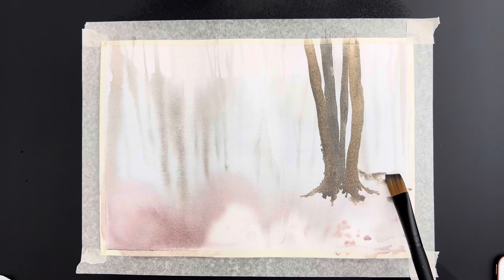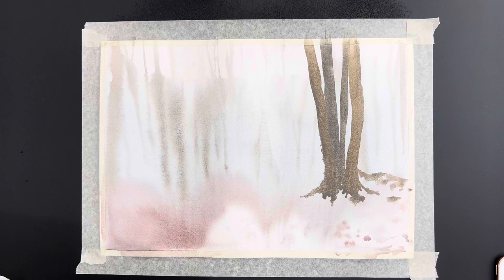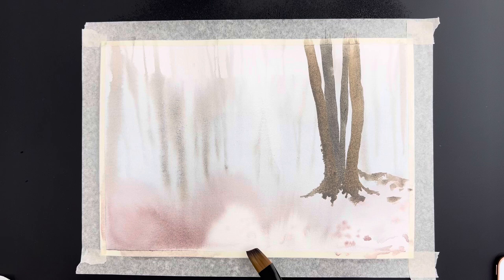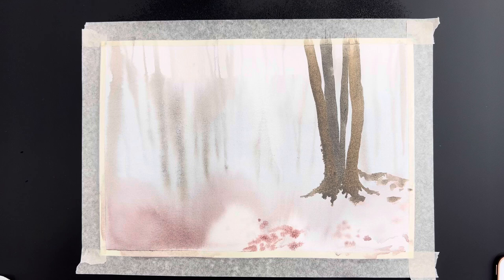Here I just use random strokes just to add texture into the ground. I've picked up a little bit of this reddish brown again. And I'm adding more texture to the ground.